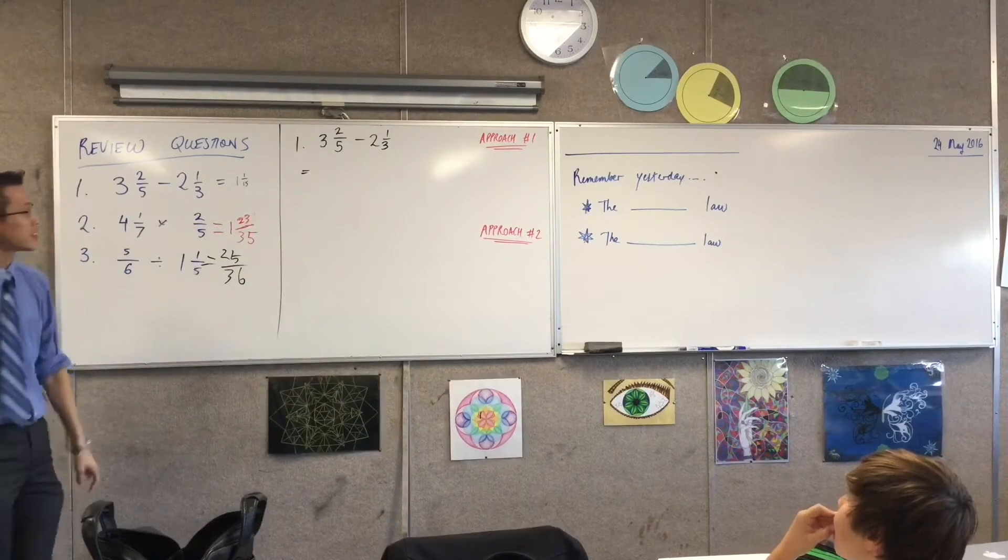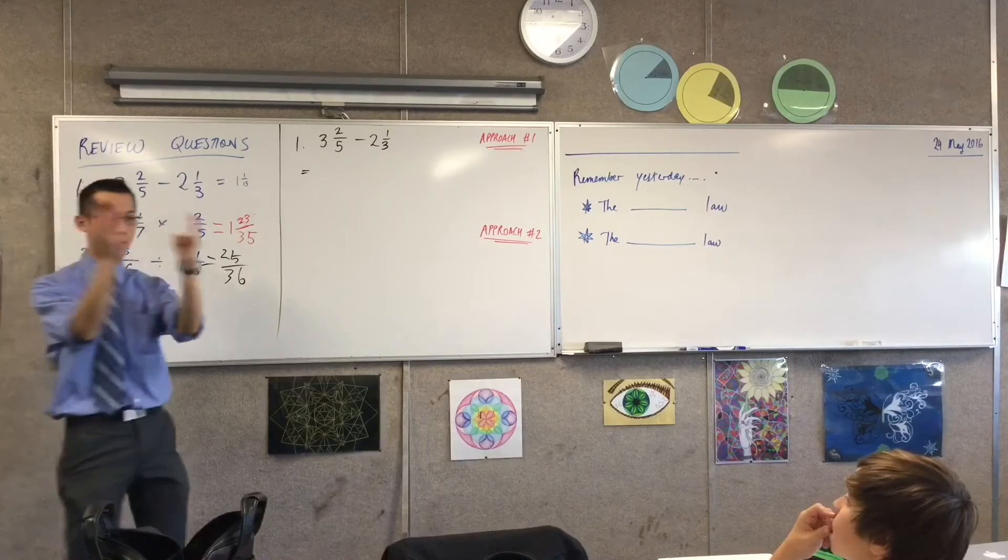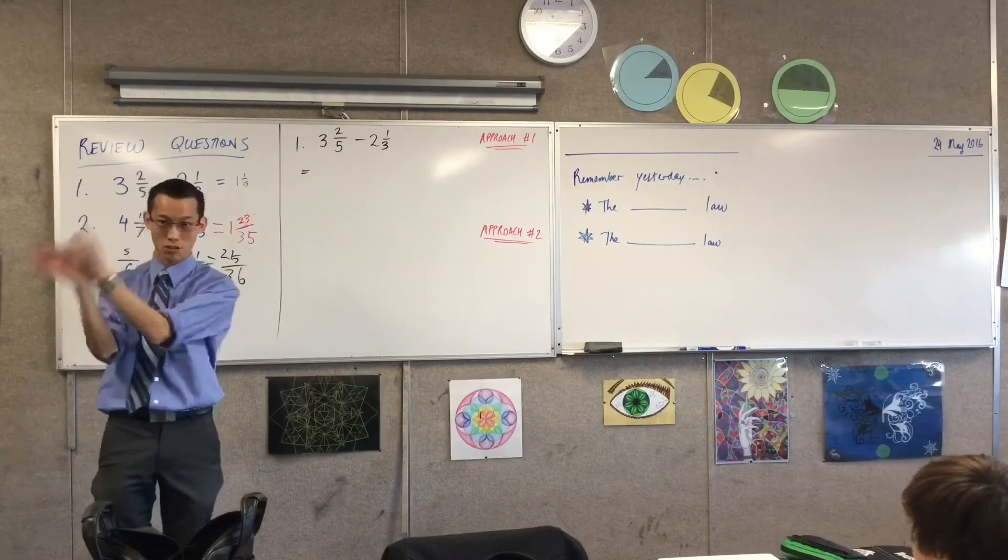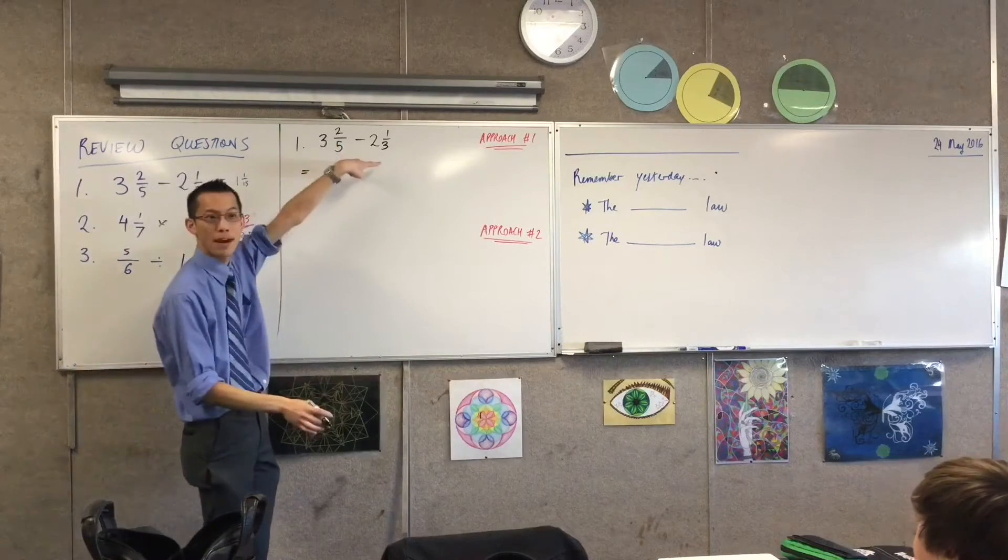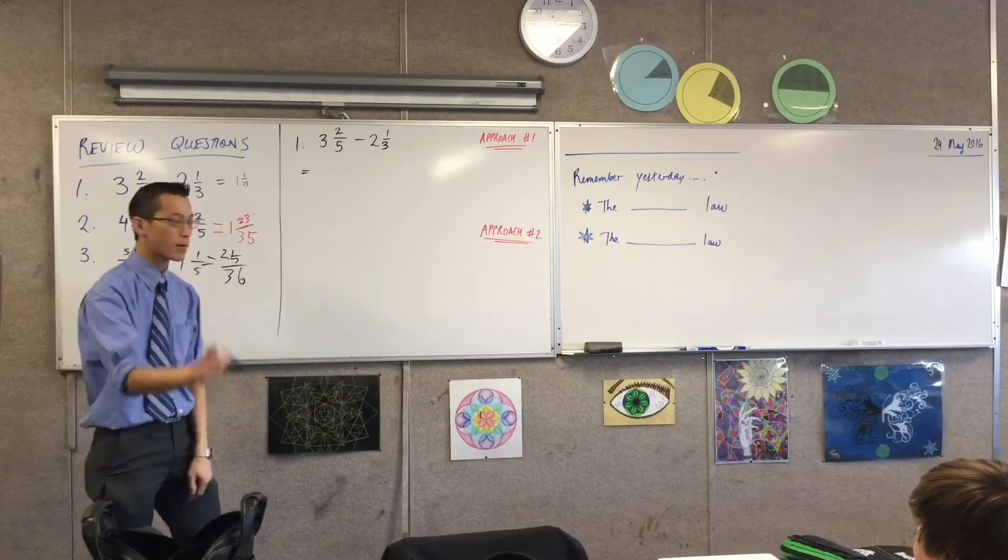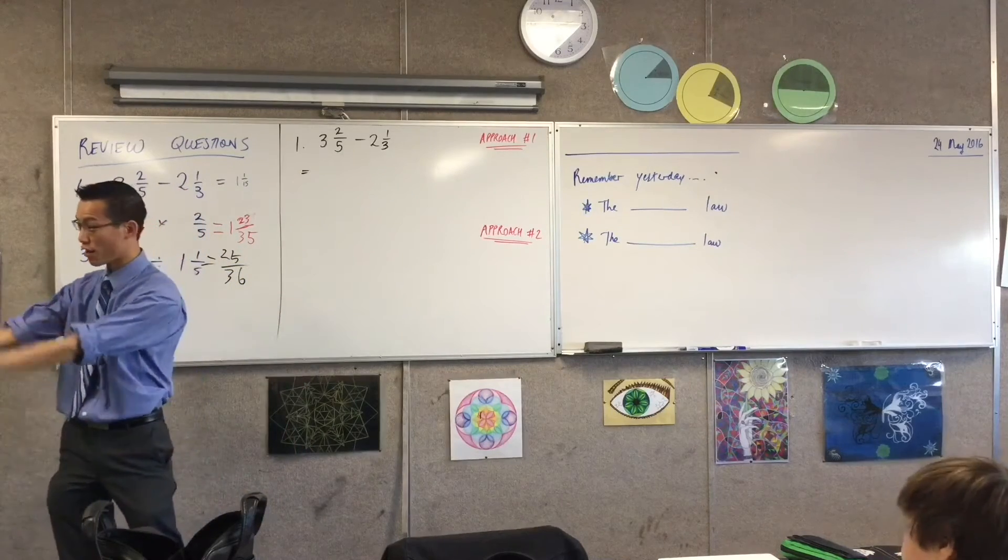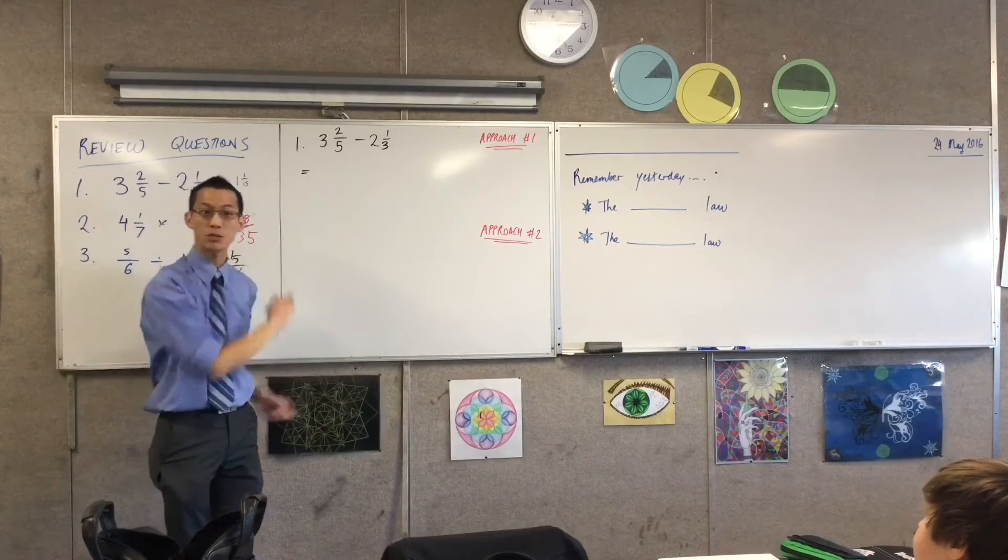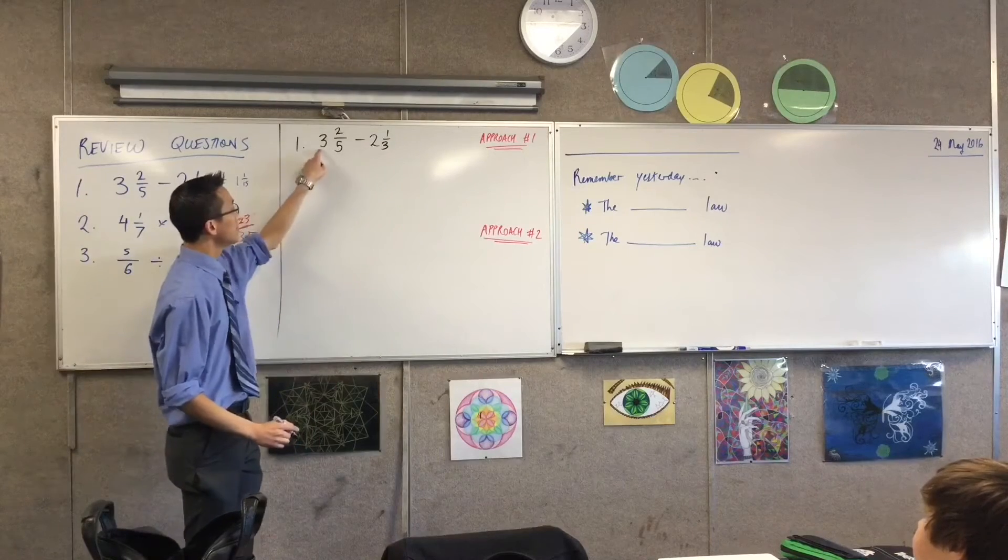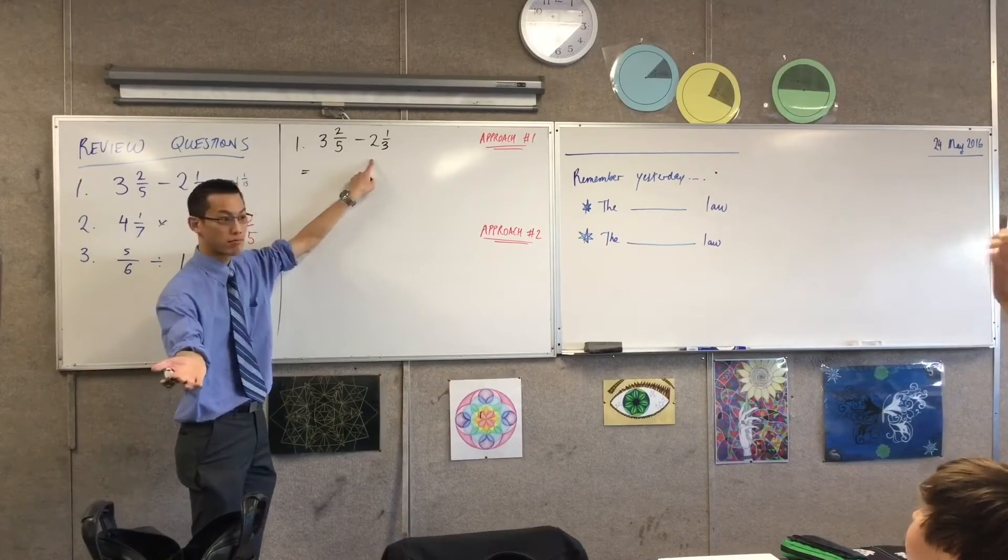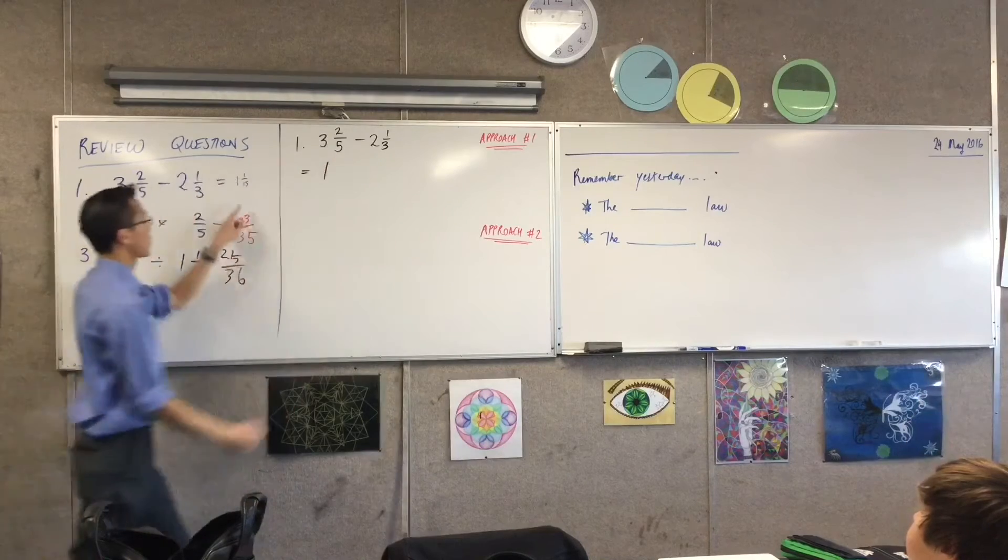Now, therefore, approach number one is I've got whole numbers and then I've got fractions. Each time I've got the whole number and the fraction. So my first approach will be I'm going to do the whole numbers first and then I'll deal with the fractions. So three take away two, that's just one. So I've got that bit already.